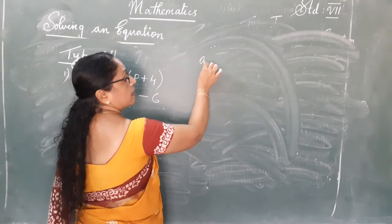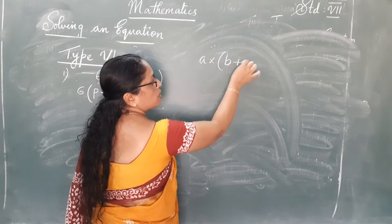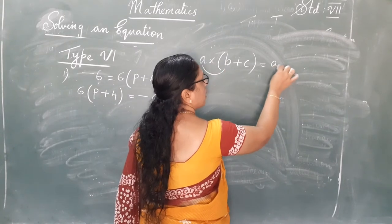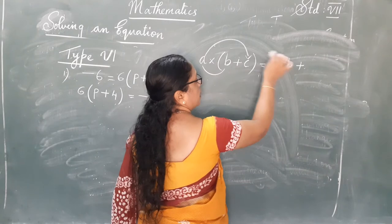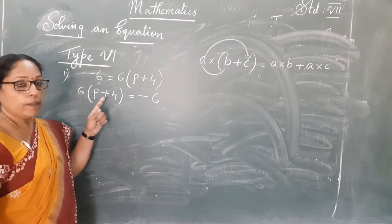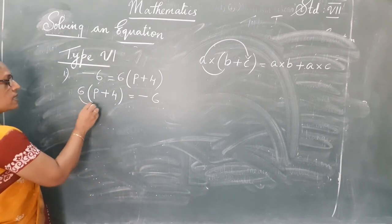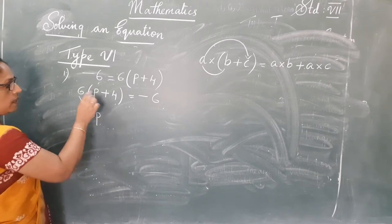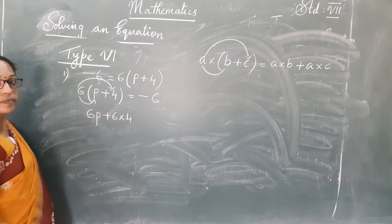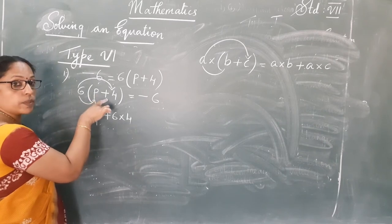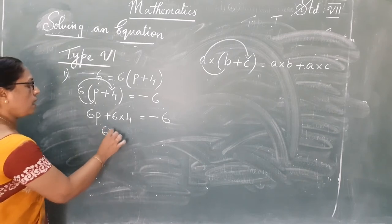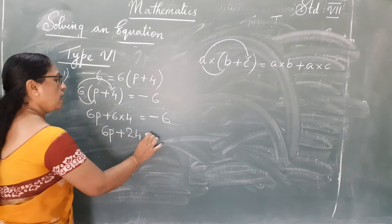The variable should always be on the left side. So turn the equation — when you turn it, there is no change: 6 into P plus 4 equal to negative 6. Now you have already learned the distributive property: A into B plus C equals A into B plus A into C. So let's apply it: 6 into P gives 6P, then 6 into positive 4, both are positive, so plus. That gives 6P plus 24 equal to negative 6.